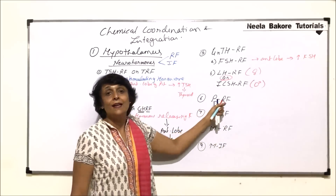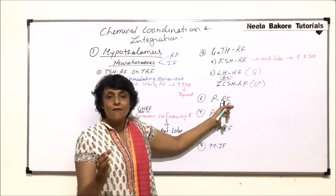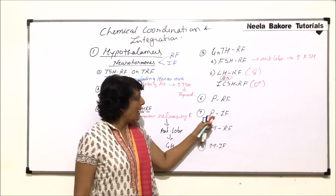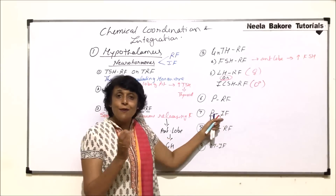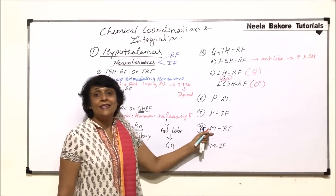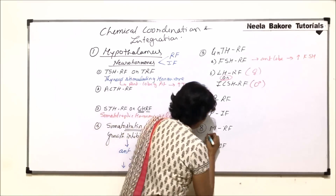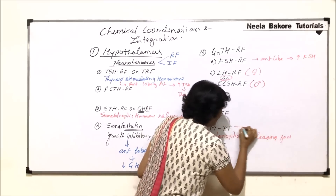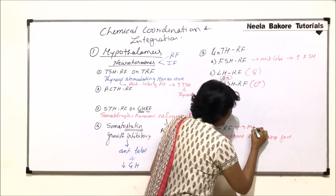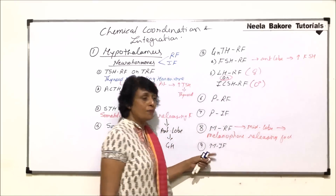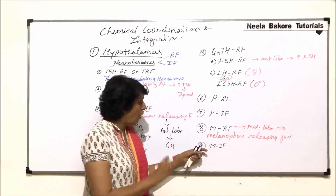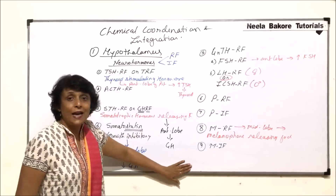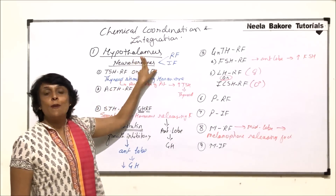Prolactin releasing factor stimulates the release of prolactin, while prolactin inhibitory factor inhibits the secretion of prolactin. Then there are melanophore releasing factors, which stimulate the middle lobe of the pituitary, causing it to secrete melanophore-stimulating hormone. There is also a corresponding inhibitory hormone. So these are nine different types of neurohormones produced by the hypothalamus.